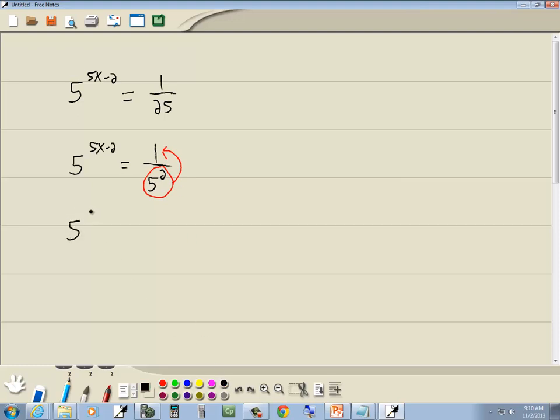So we've got 5 to the 5x minus 2 equals... Now remember, when you take anything opposite of where it's at in a fraction, the sign of the exponent changes. So this becomes 5 to the negative 2.